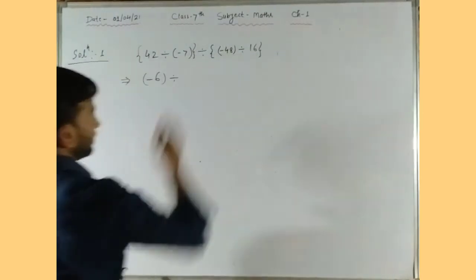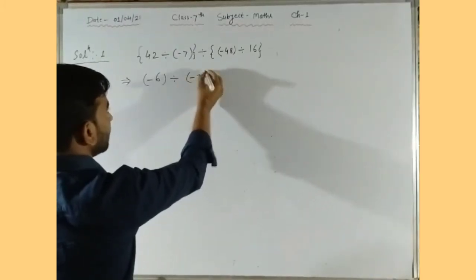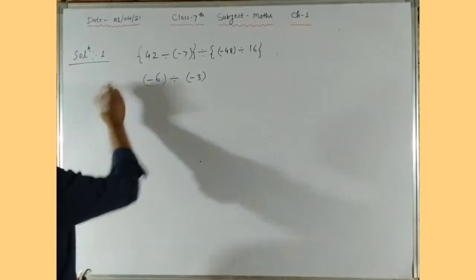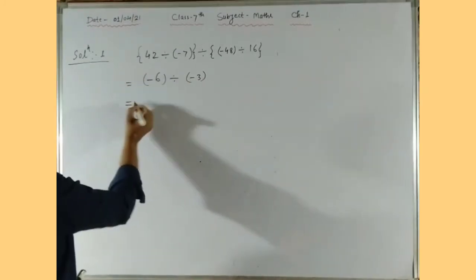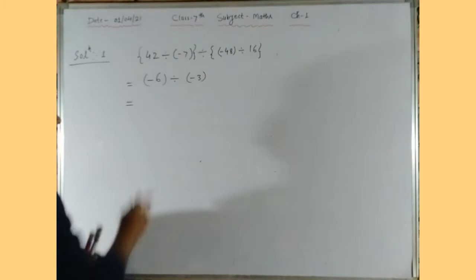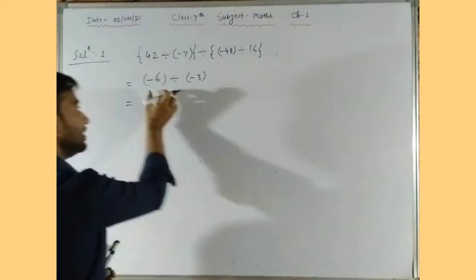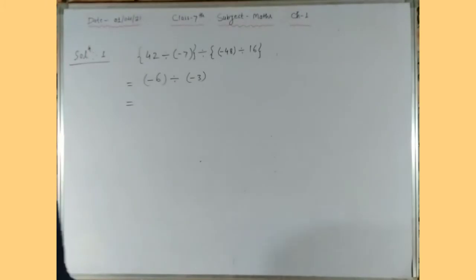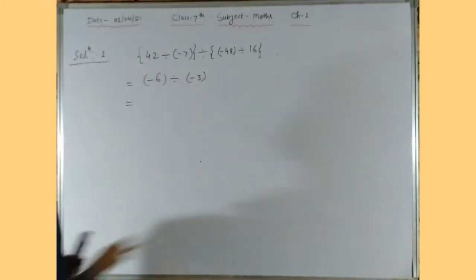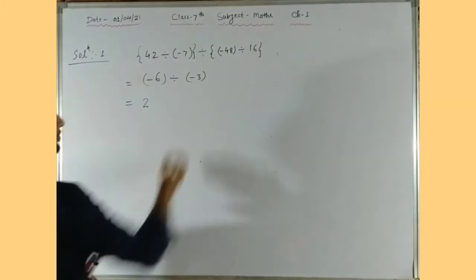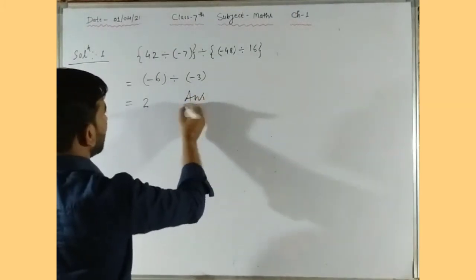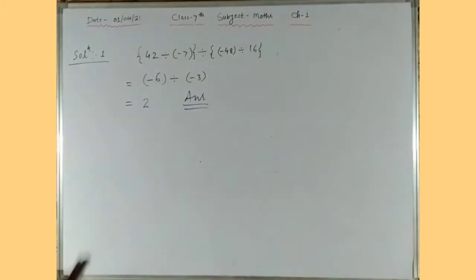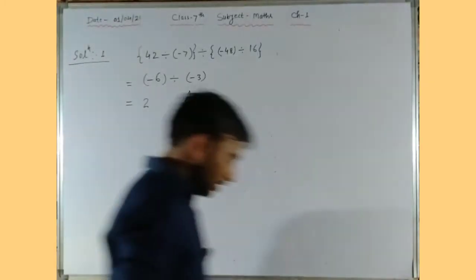The second bracket gives minus 3. So we get minus 6 divided by minus 3. Here both the divisor and dividend have negative signs, so the quotient will be positive. This is the simplification of question number 1. The answer is positive 2.